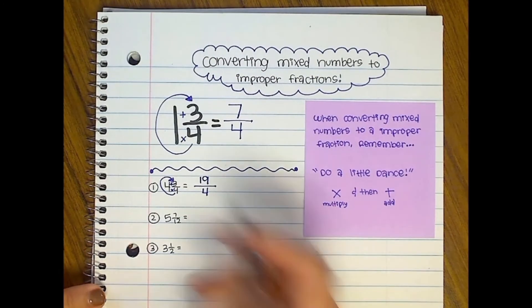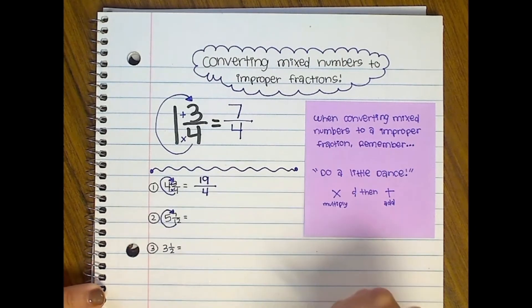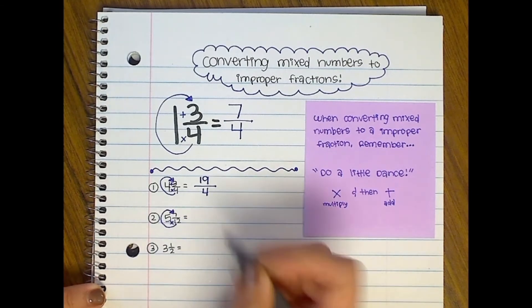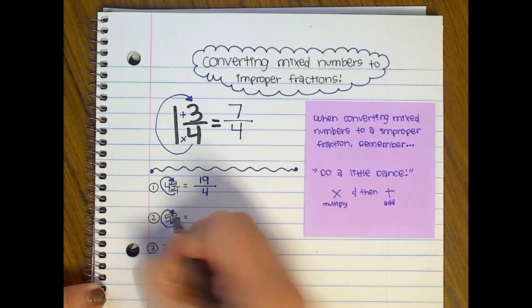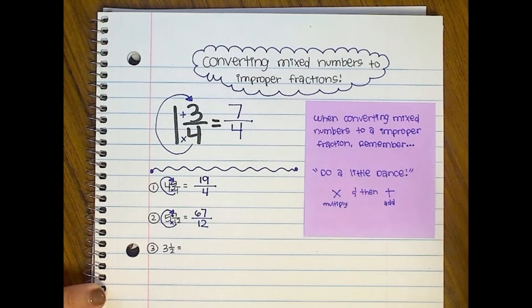Then number two, same thing. Do a little dance with that cute little arrow so that we can remember. And then you'll do 12 times five, which is 60, plus seven, which is 67 over 12 because the denominator always stays the same.